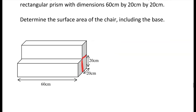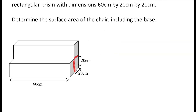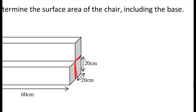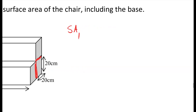If we go back a couple pages and look at what our surface area formula is for a rectangular prism, we're going to start out calculating for one rectangular prism. Our formula is 2 multiplied by the quantity: width times length, plus height times length, plus height times width.